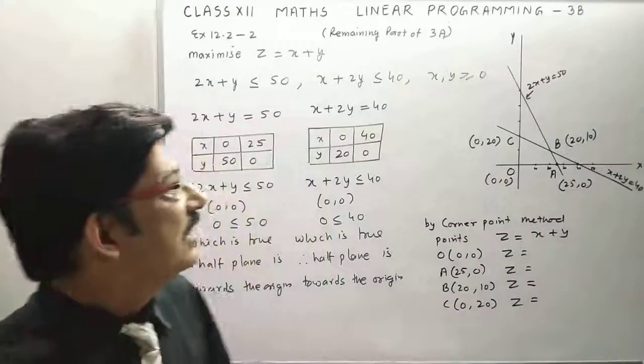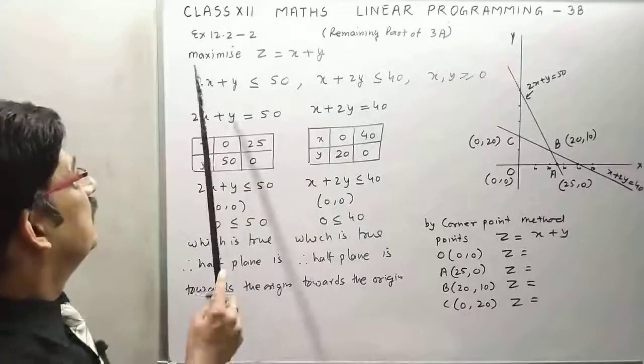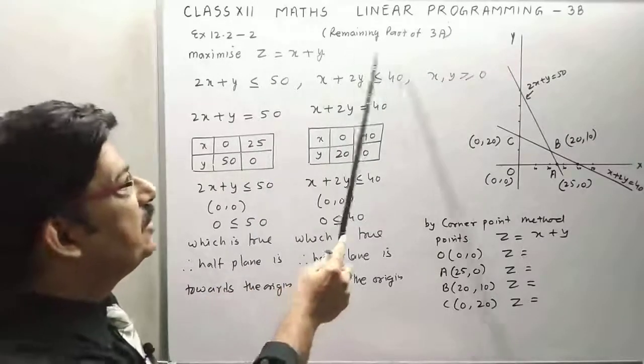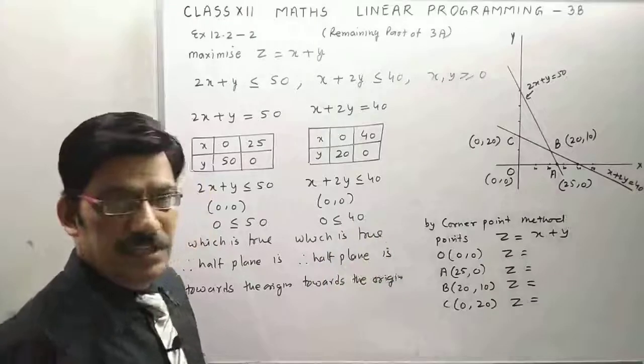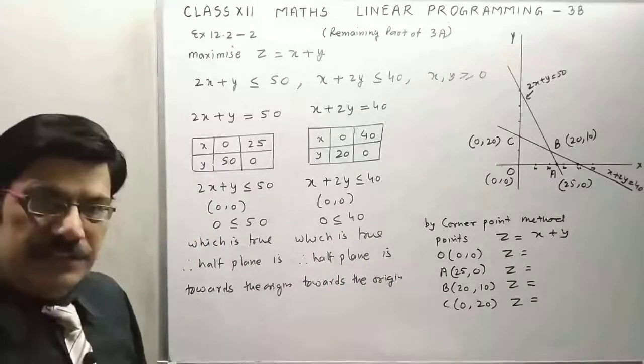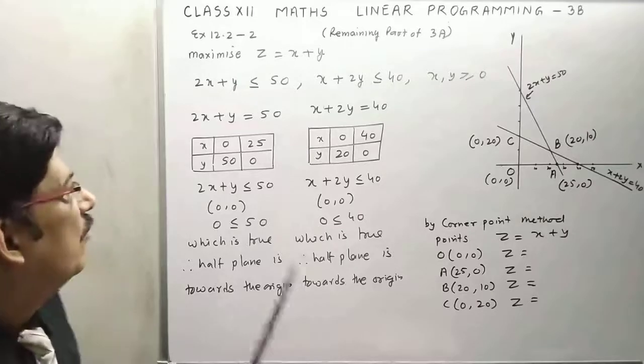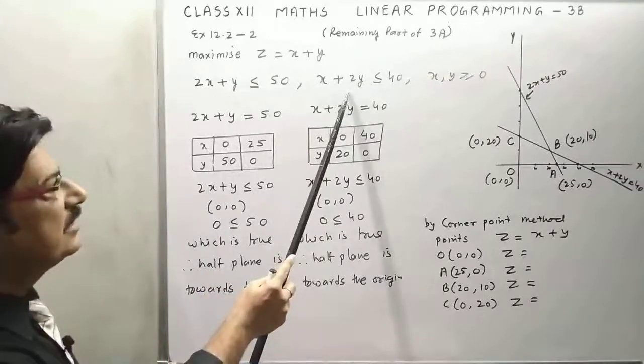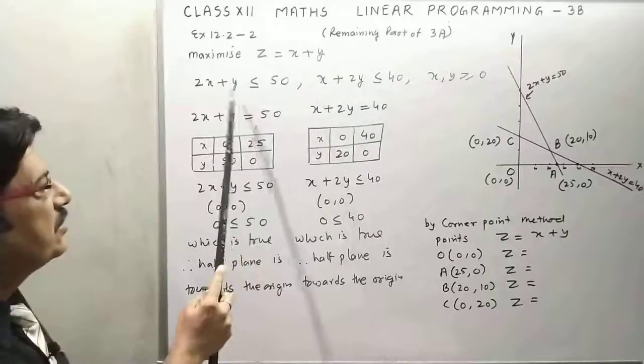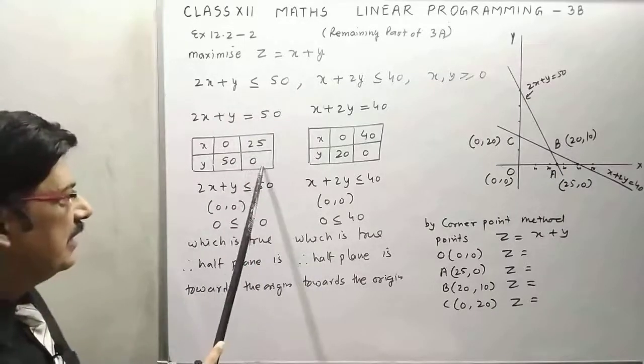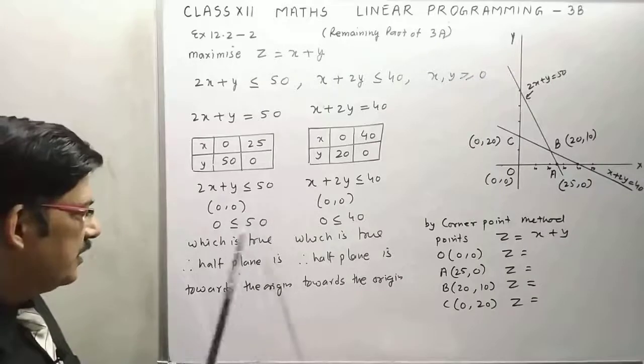Students, as we have made objective function and constraints in the video Linear Programming 3A, now in this video we will solve this and tell how many cakes are there. Now for that we have two constraints and this is the objective function. First of all, convert this into equality, take two points, and justify whether it is true or false.